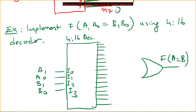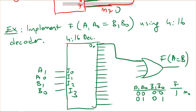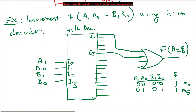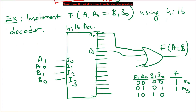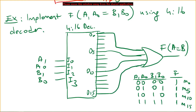The function f is a equals b. We identify where a equals b: when a1 a0 b1 b0 is 0000, output is one — this is m0. When it is 0101, output is one — this is m5. When it is 1010, output is one — this is m10. When it is 1111, output is one — this is m15. So we OR outputs m0, m5, m10, and m15 to implement the two-bit equality comparator.